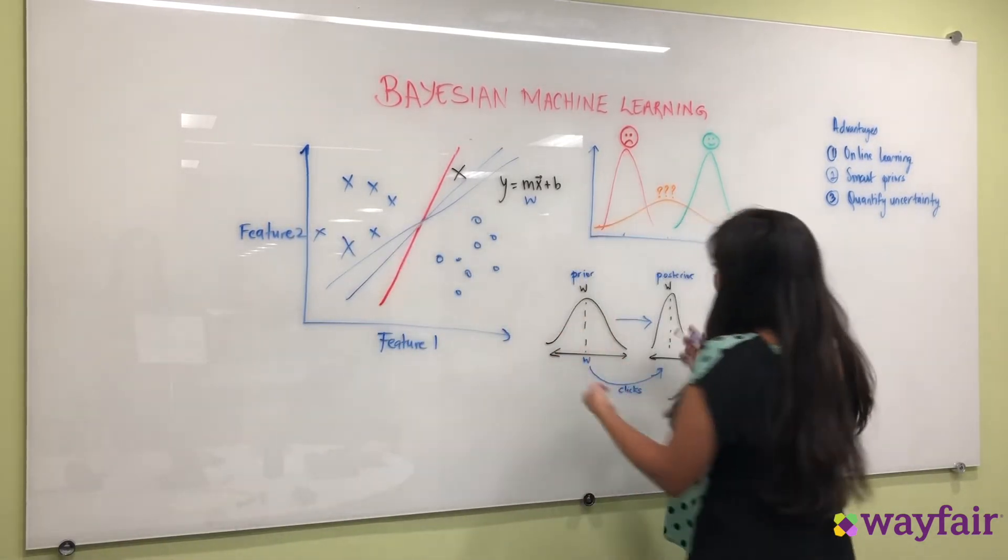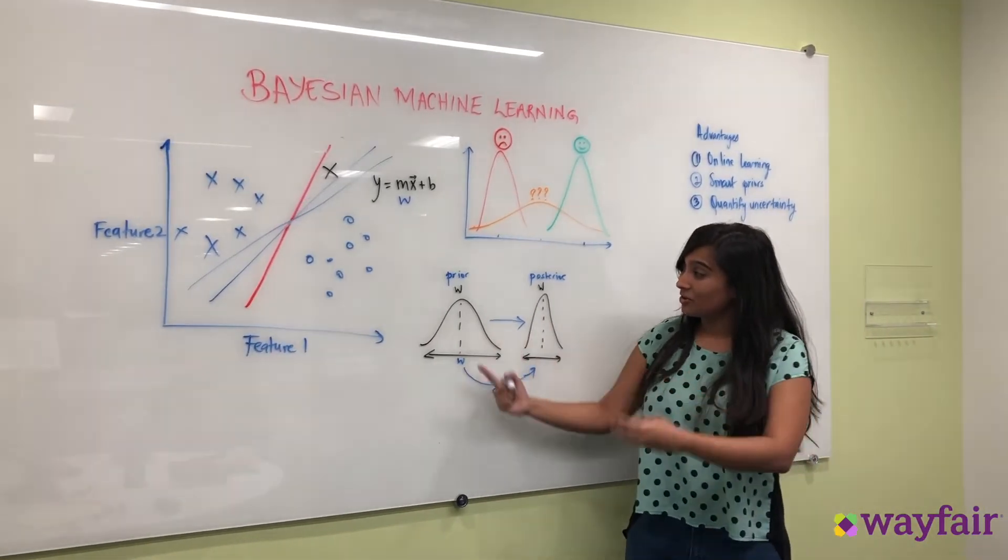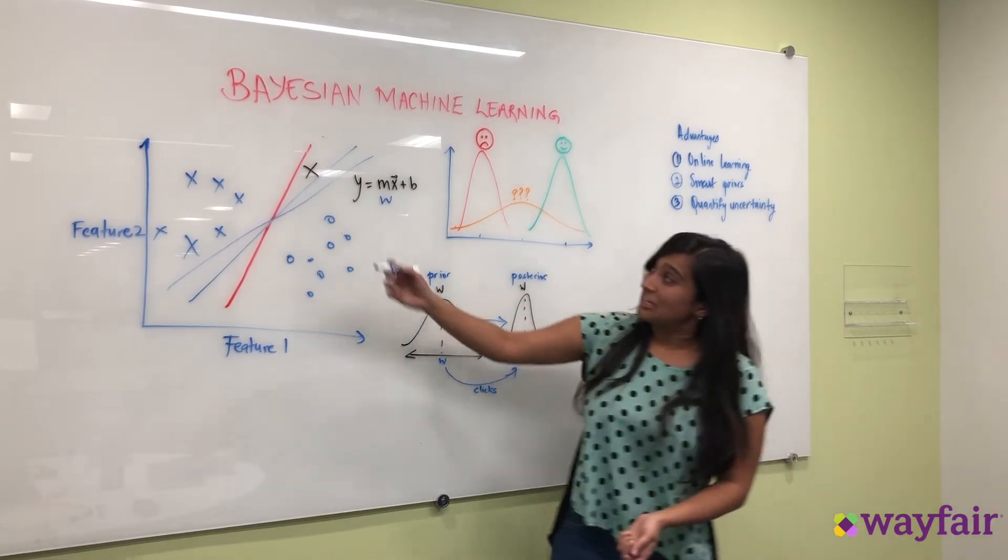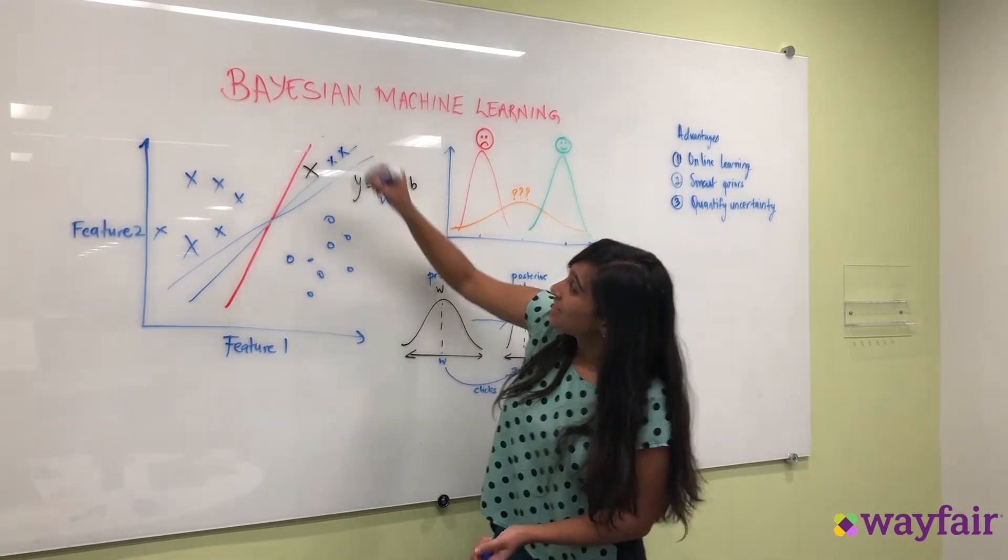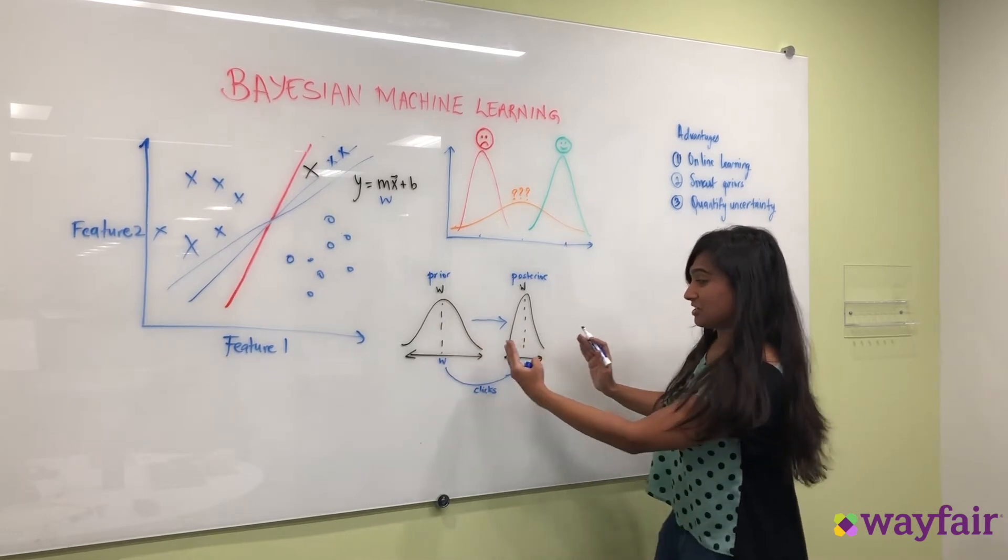In a Bayesian framework the beautiful thing that you can do is that you can continue to update your weights based on new data. So the minute you start seeing more hot dogs in this space you're going to keep changing your model such that it shifts in such a way.